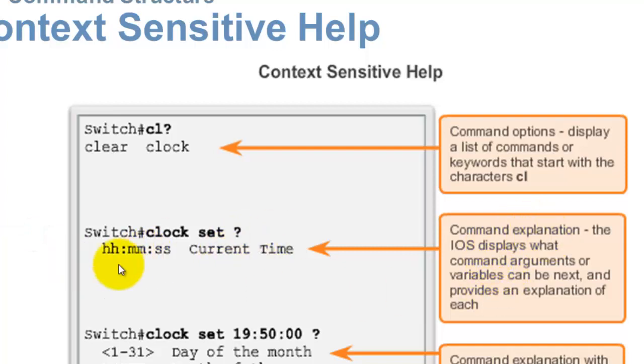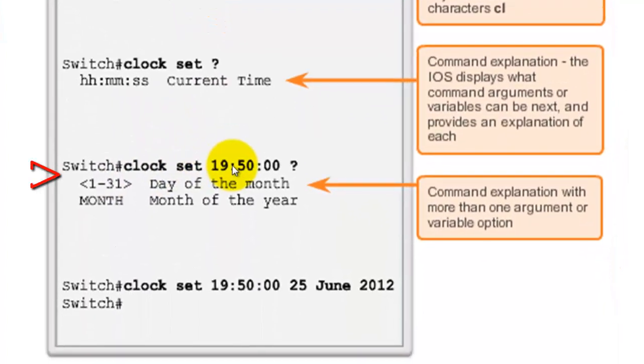It gives you an explanation. It says okay, hour, hour, colon, minute, minute, colon, second, second for the current time. Great, so now I've almost got this figured out, but what comes after the actual time? Question mark again, and it says the day of the month, and then the month and month of the year.